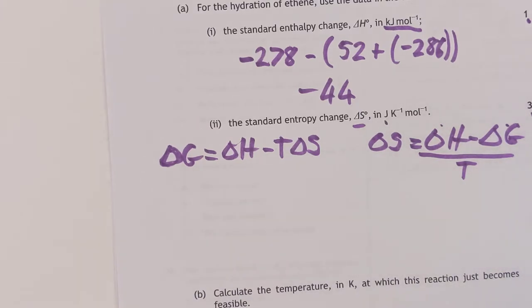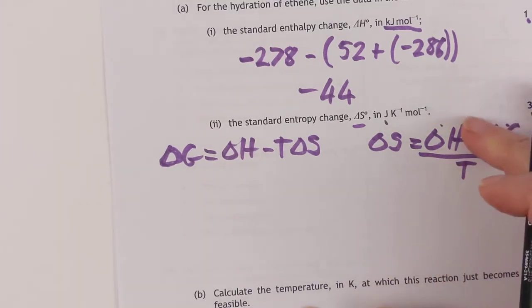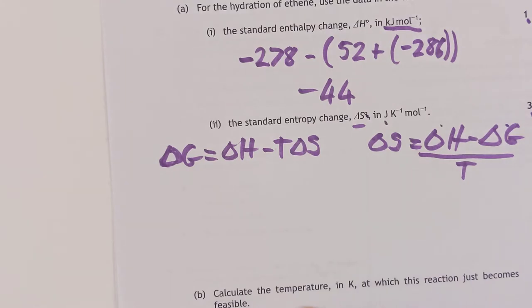T apparently is not given in the table — they haven't given you T. But actually I wasn't wrong at all, because they do ask you to calculate the temperature. It's really sneaky because it seems to contradict itself, but the little circle means standard conditions. So we do actually know T — it's 298 Kelvin.